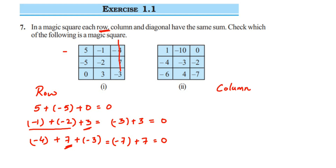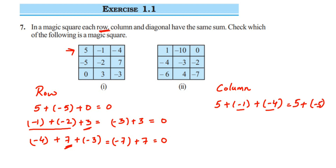For the first column we have 5 + (−1) + (−4). Adding the same-sign integers: −1 and −4 give −5. Then 5 + (−5) = 0. For the second column: (−5) + (−2) + 7. Adding −5 and −2 gives −7, and −7 + 7 = 0.